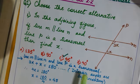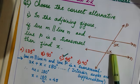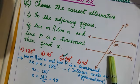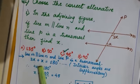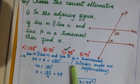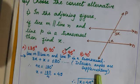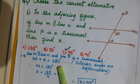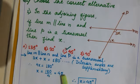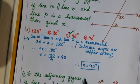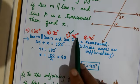Line m is parallel to line n and line p is a transversal. So 3x and x are interior angles. Therefore 3x plus x equals 180 degrees — interior angles are supplementary. 3x plus 1x is 4x equals 180, so x equals 180 divided by 4, which is 45 degrees. The answer is option C.